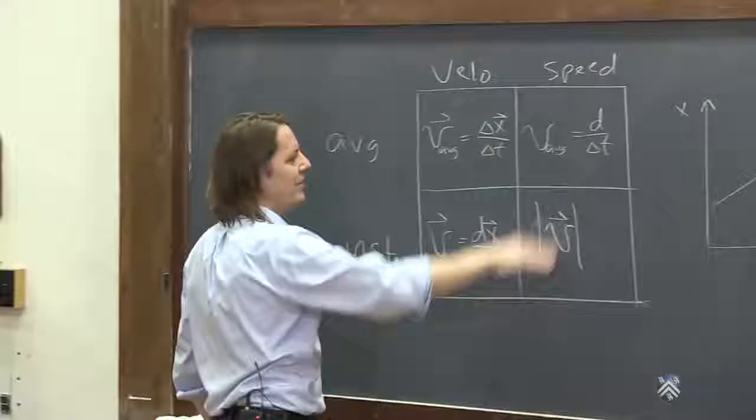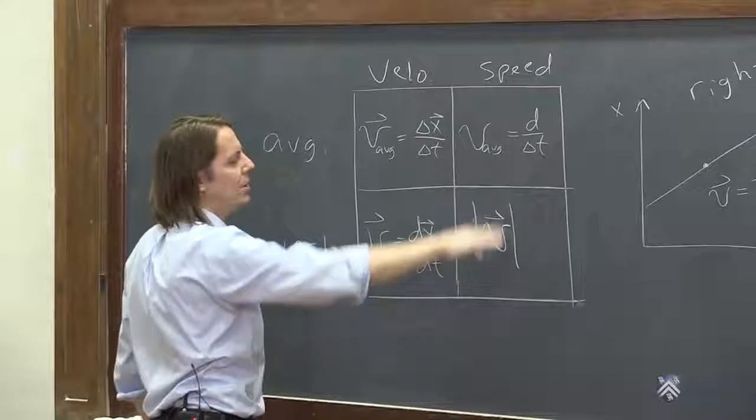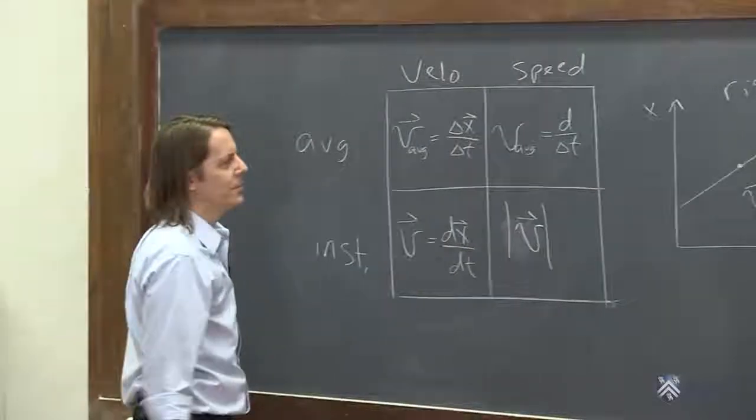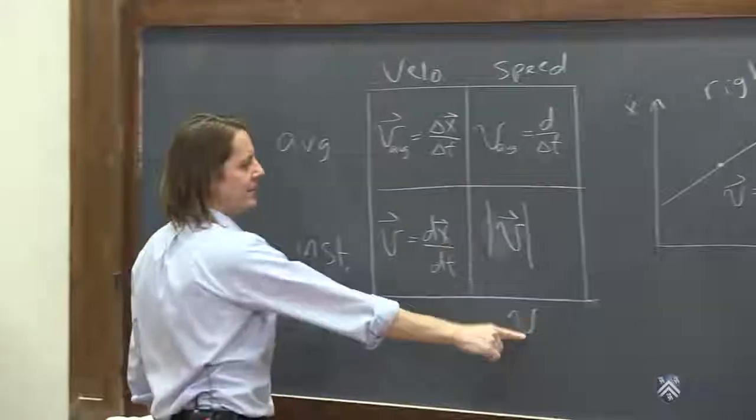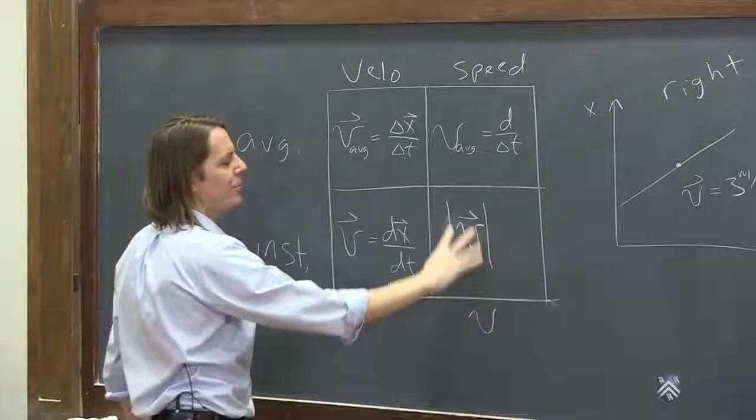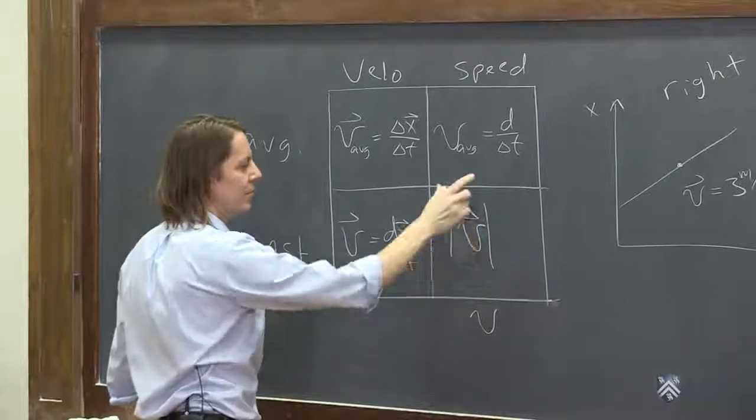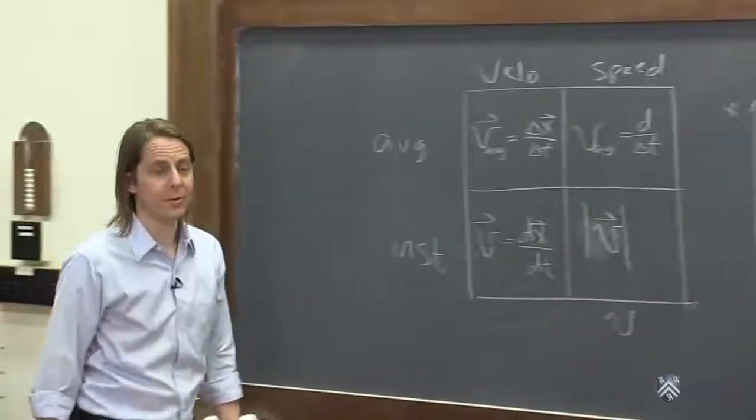So this is 3 meters per second, or minus 3 meters per second. When you put these on it, it's just 3. It's how long the vector is, not which way the vector's pointing. So we rarely really talk about the instantaneous speed. A lot of times we would just say v, instantaneous, no vector. But formally, I want to write it like this. It's a vector, but it's just the magnitude of the vector.